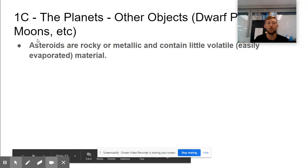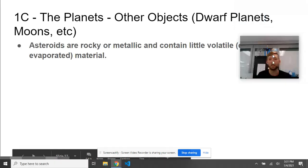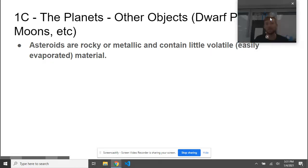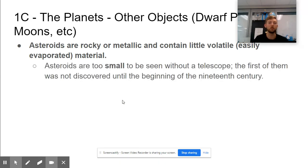Asteroids are rocky and metallic and contain little volatile, which would be easily evaporated material like ice or water. Asteroids are too small to be seen without a telescope, so you're not going to see them in the night sky. They're dark—they don't produce their own light—and they weren't even discovered until the beginning of the 19th century.